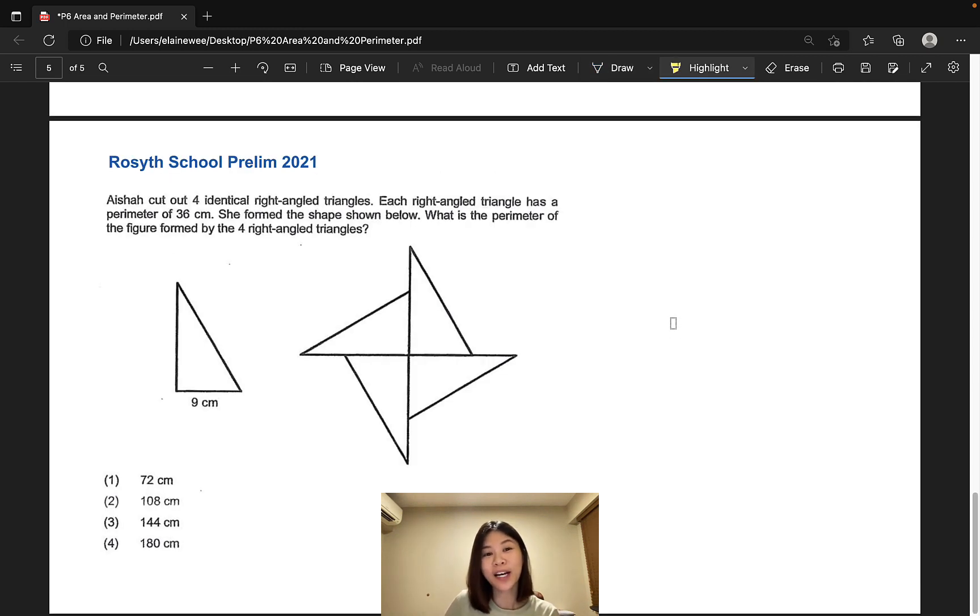Now moving on to the last question taken from Rosyth School, we will be looking at a composite figure made up of four identical right angled triangles. Now each right angled triangle has a perimeter of 36 cm. So for this question, we are required to find the perimeter of this figure. The only two information we have is the perimeter of one right angled triangle, which is 36, and we are also provided with the base length of the triangle, which is 9 cm.